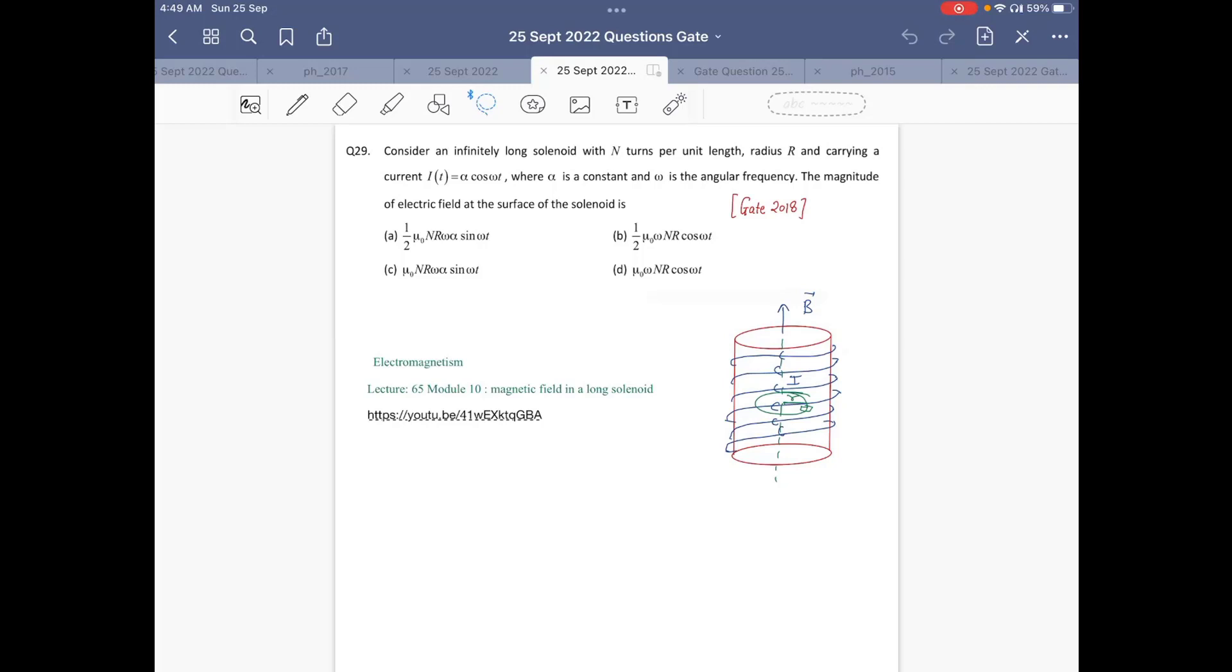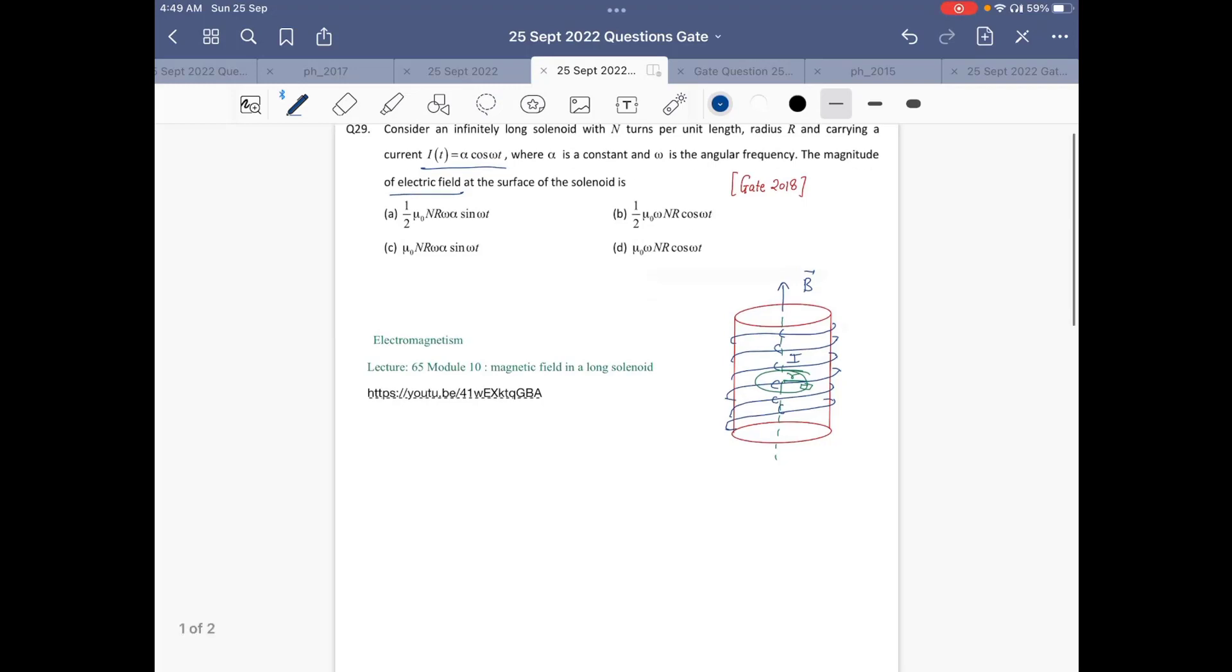In this question, it is given that consider an infinitely long solenoid with turn per unit length radius R, carrying current I(t) which equals α cos ωt, where α is a constant and ω is the angular frequency. What is the magnitude of electric field at the surface of the solenoid? So basically we have given the current inside a solenoid and we have to find the electric field.